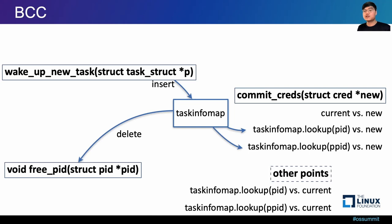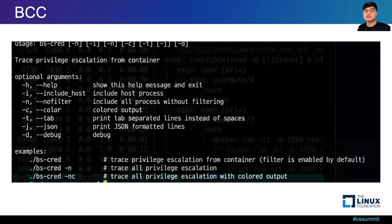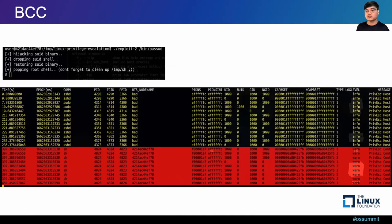Additional tracing points other than commit_creds can be used to compare current privileges with previous credential privileges. The default detection tool detects and prints container and host privilege escalation events according to the options provided. When the privilege escalation detection tool is executed and privilege escalation is attempted in a container, a warning event is generated, as shown in the red part of the figure. At this time, type 1, 2, and 3 are printed together, depending on which value is compared with the new value.